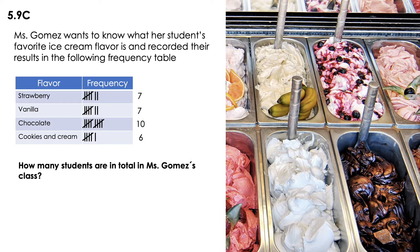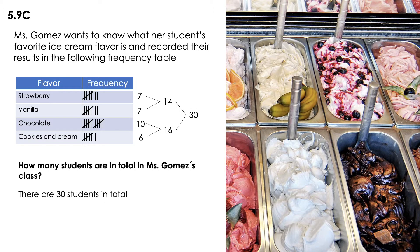The next question is: how many students are in total in Ms. Gomez's class? I can put all of those numbers together. So 7 plus 7 is equal to 14. Then 10 plus 6 is equal to 16. And then 14 plus 16 is equal to 30. There are 30 students in total.